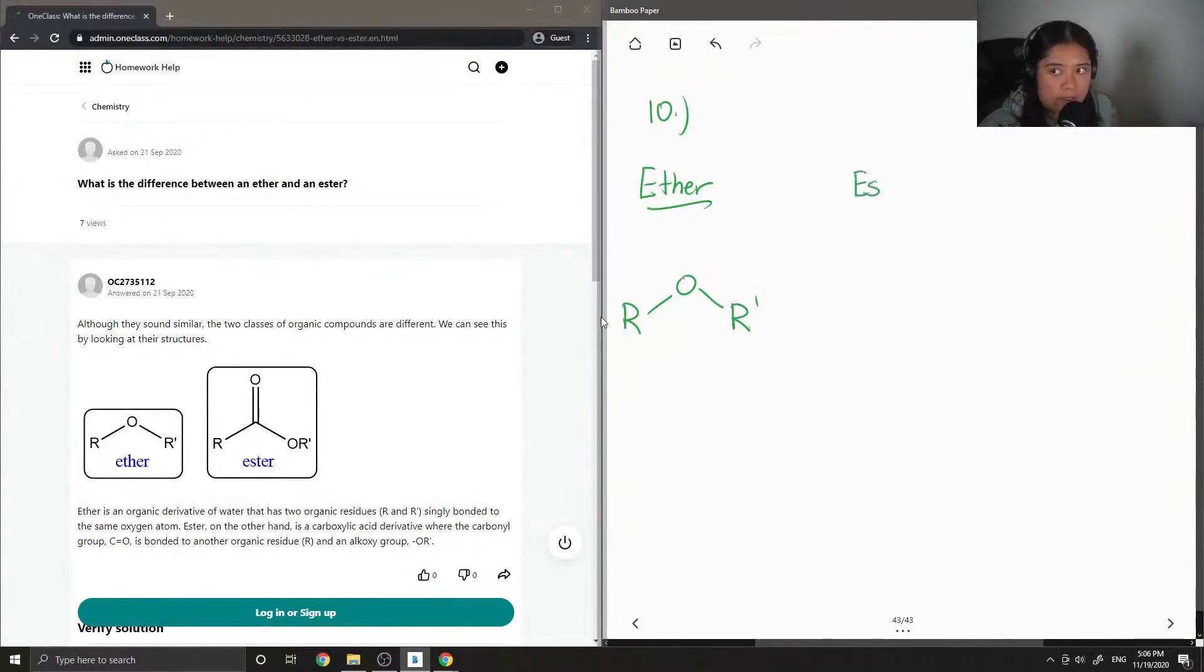Esters are similar to ethers, except it's kind of like the carboxylic derivative. So it is also in the middle of two carbon groups, except it has a double bonded O and another O.